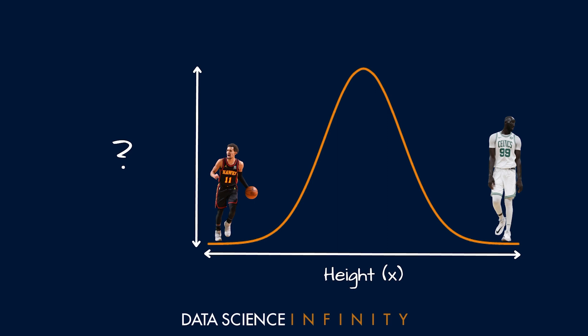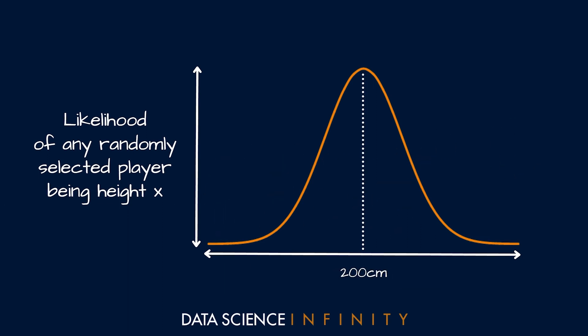And in our specific case here, let's think of the y-axis as representing the likelihood of any randomly selected player from the population or sample being of height x. Let's put this in real terms. Let's say that the average or mean height across all 450 NBA players was 200 centimeters, or 2 meters. If we were to pick one of those 450 players at random,